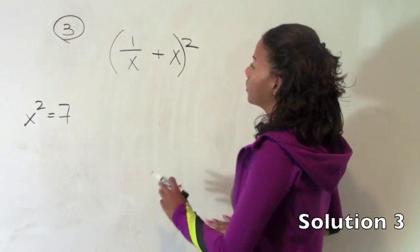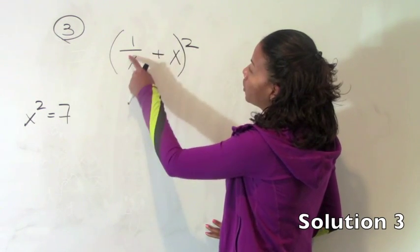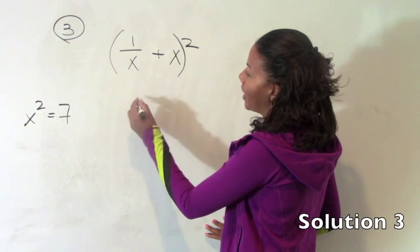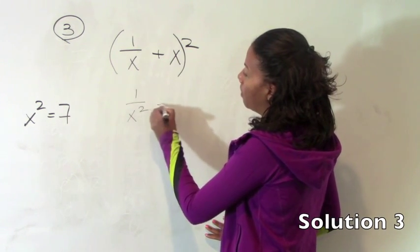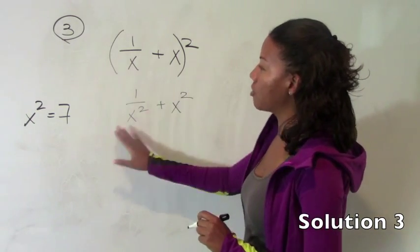So here's the common mistake. First I'm going to show you the common mistake. You square the first term and square the second term and that's it. So you get 1 over x squared plus x squared. This is not correct.